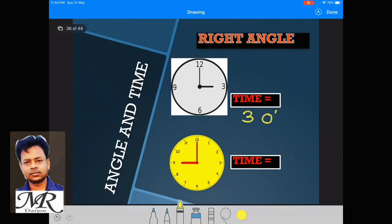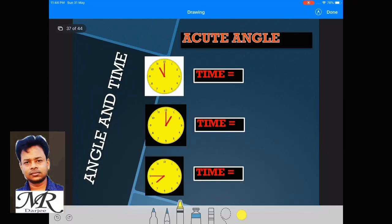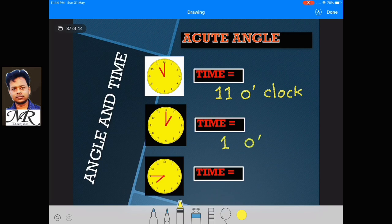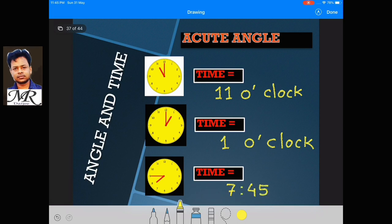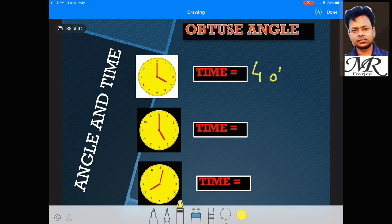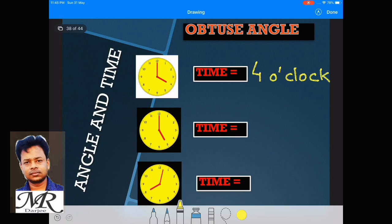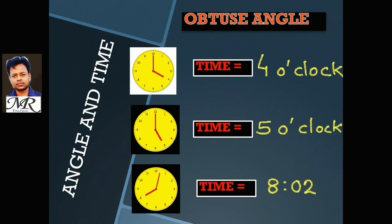Angle and time. See some right angles — here time is 3 o'clock, and here time is 9 o'clock. Here are acute angles — time is 11 o'clock, here 1 o'clock, here 7 hours and 45 minutes. Obtuse angles — here time is 4 o'clock, here 5 o'clock, here 8 hours and 2 minutes. These are all examples of obtuse angles.